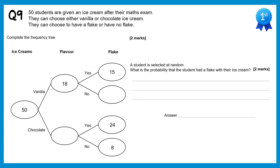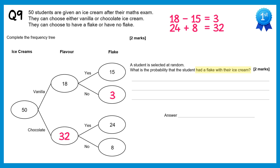For this frequency tree question: 18 people had vanilla ice cream, 15 also had a flake, so 18 − 15 = 3 didn't have a flake. For chocolate ice cream, 24 had a flake and 8 didn't, so 24 + 8 = 32 had chocolate. For the probability of selecting someone who had a flake: 15 + 24 = 39 people had a flake out of 50 total, so the probability is 39/50.